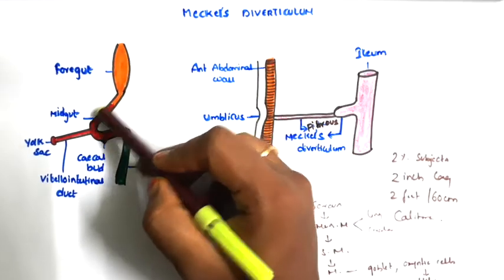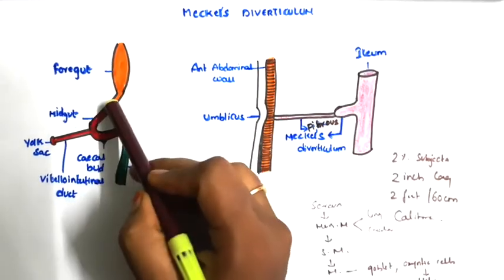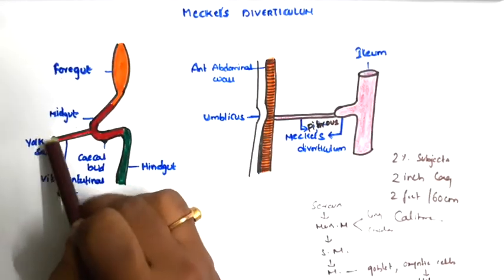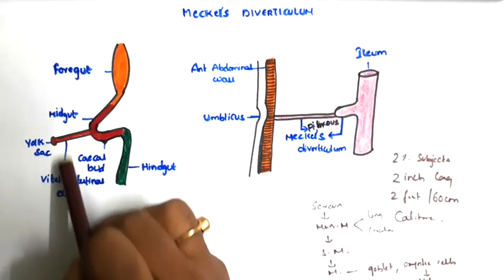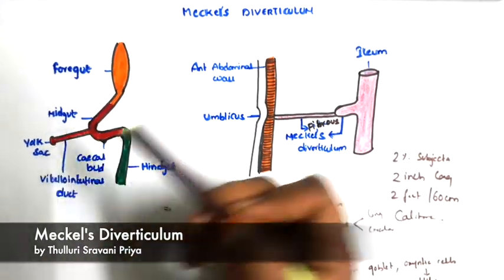This is the foregut, this is the midgut, and this is the hindgut. The midgut communicates with the yolk sac through the vitelline duct. This is the vitelline duct.